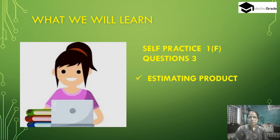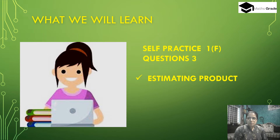Today we will learn and solve self practice exercise questions 1F, questions 1 to 5. Chapter name is 'Knowing Our Numbers' and topics are estimating sum, estimating difference, estimating product, and estimating quotients. Let's have a look at some questions.